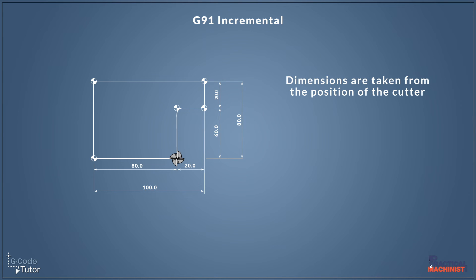And if we're in incremental we would still state it's an 80 millimetre movement from that datum. So if we're working in G91 incremental, the machine now takes this position as its x0, y0, z0 position.